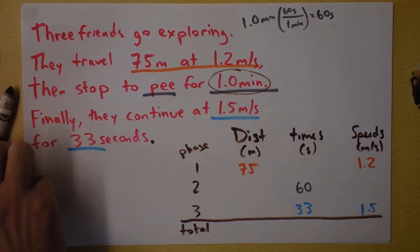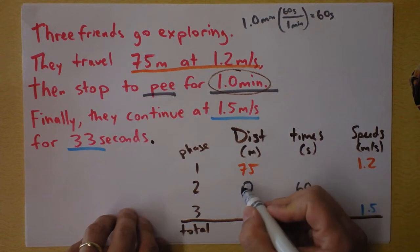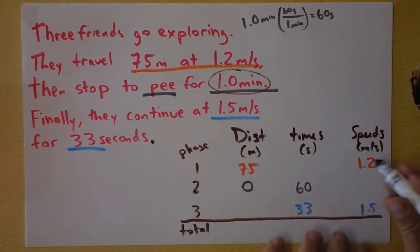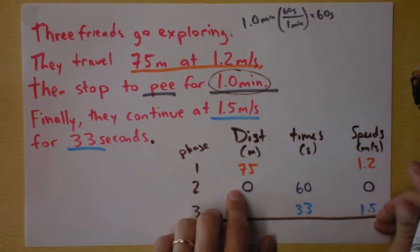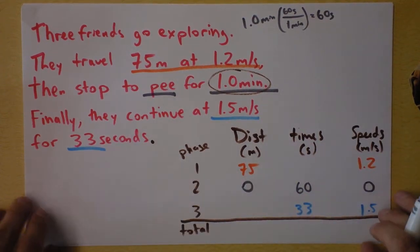The first one that I see is that we should have a zero distance during the peeing time. You don't walk and pee. That's just one of the things. And then speeds? Well, your speed is zero if the distance, zero, divided by the time, 60, is our speed.